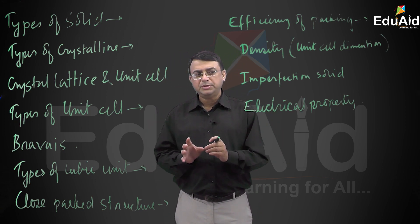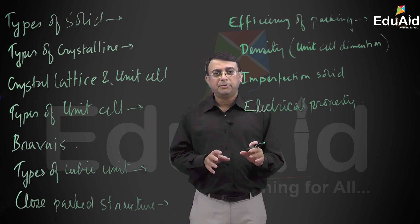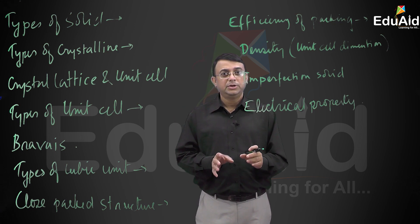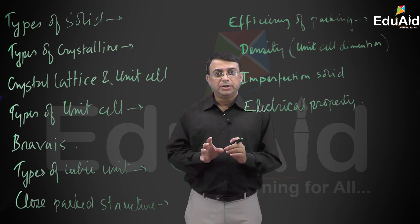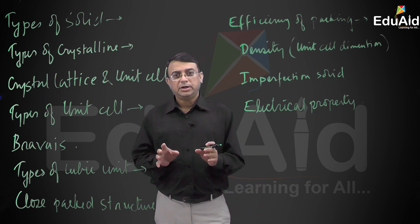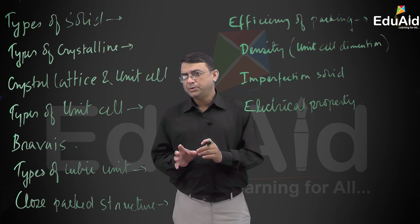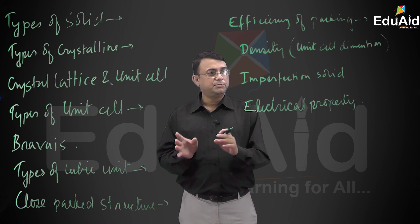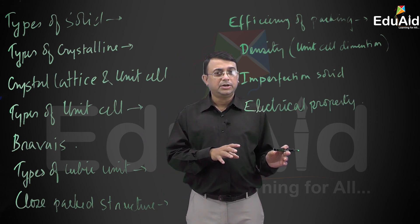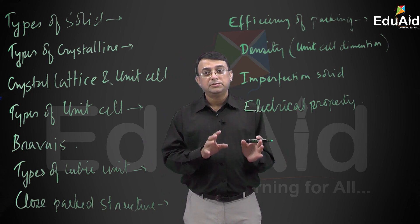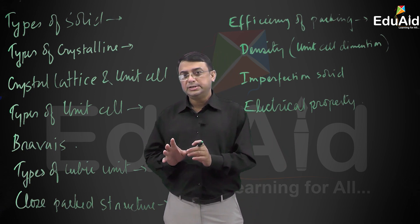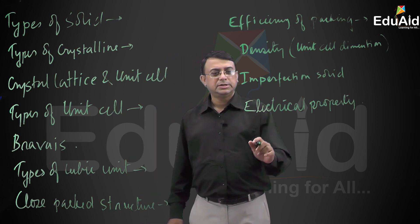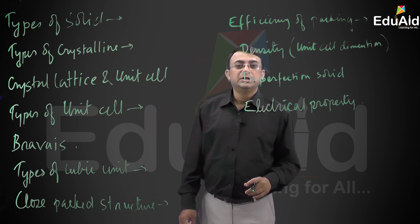More specifically, we have discussed semiconductors in detail. Different types of semiconductors such as n-type semiconductor, p-type semiconductor, and intrinsic semiconductor are the things we have discussed under electrical properties.